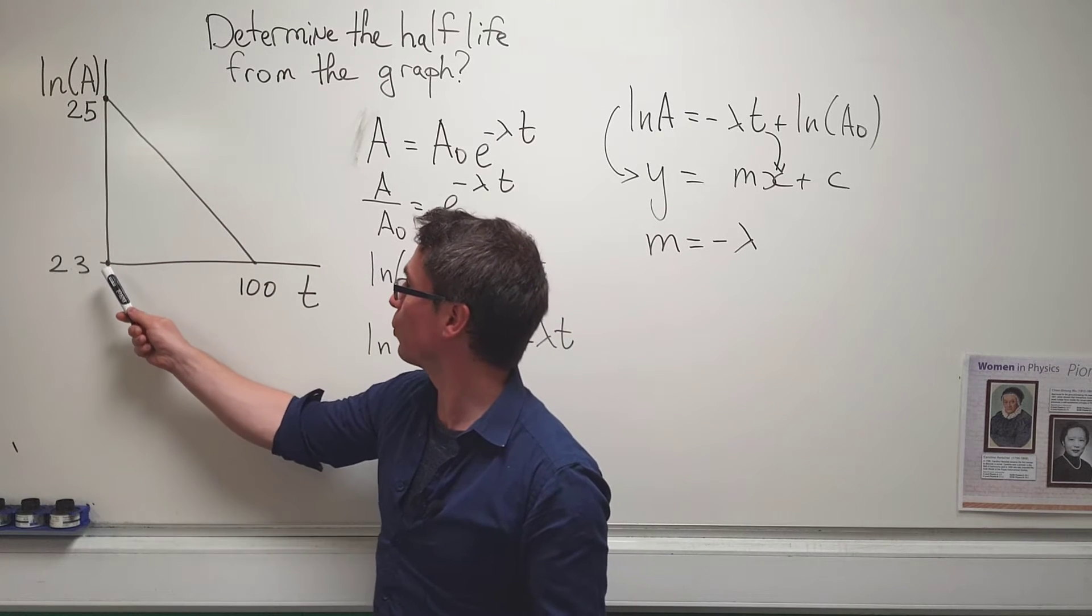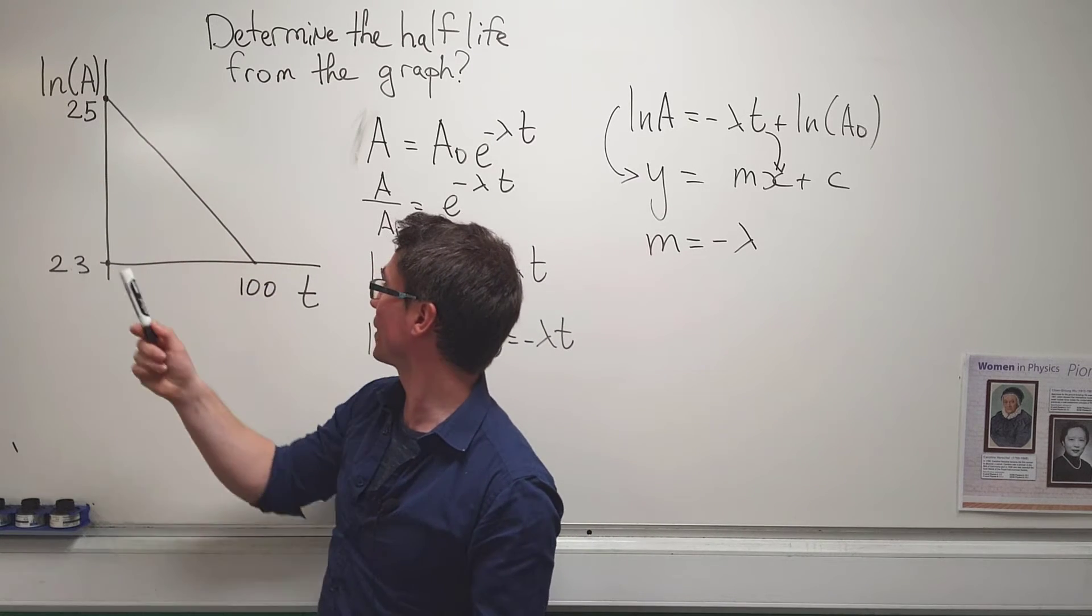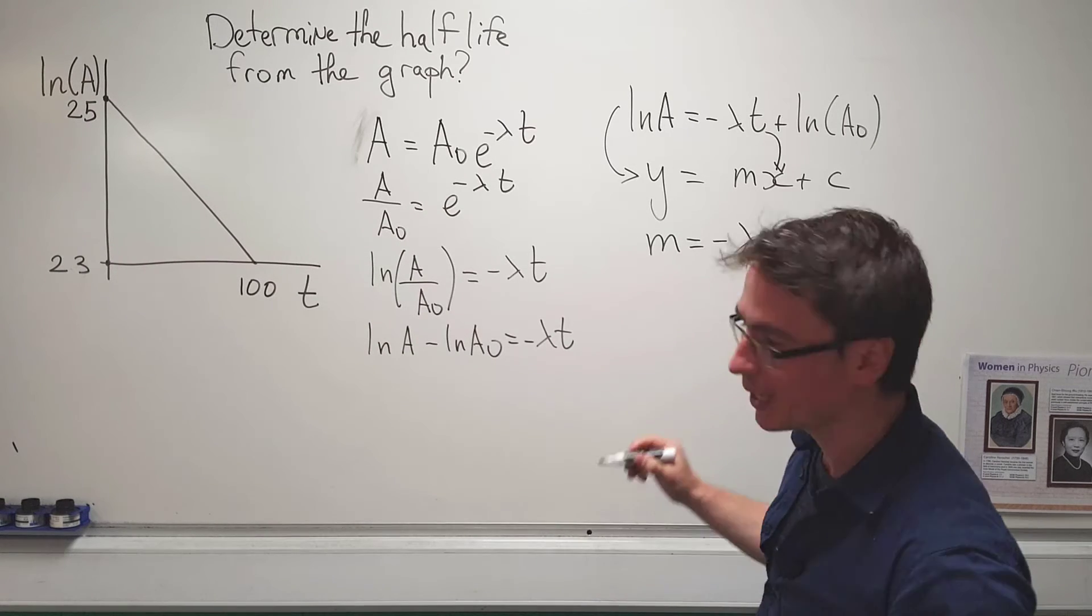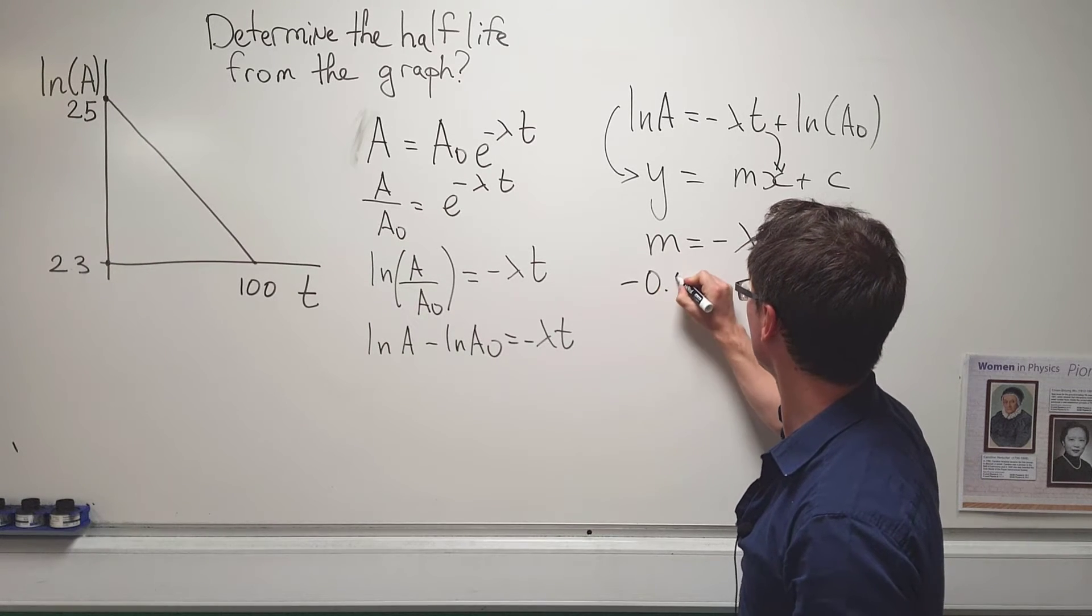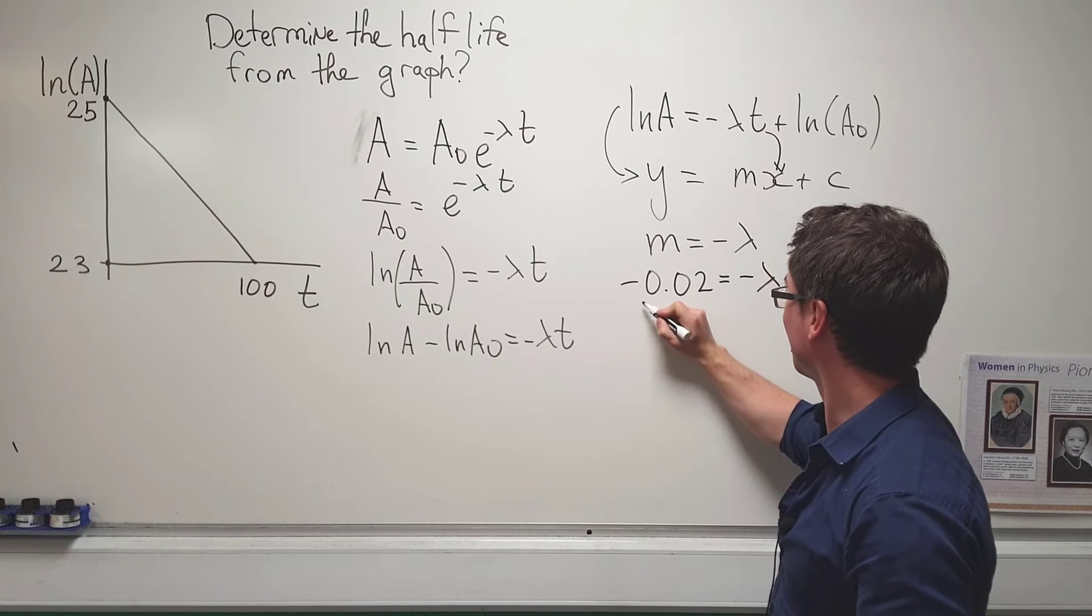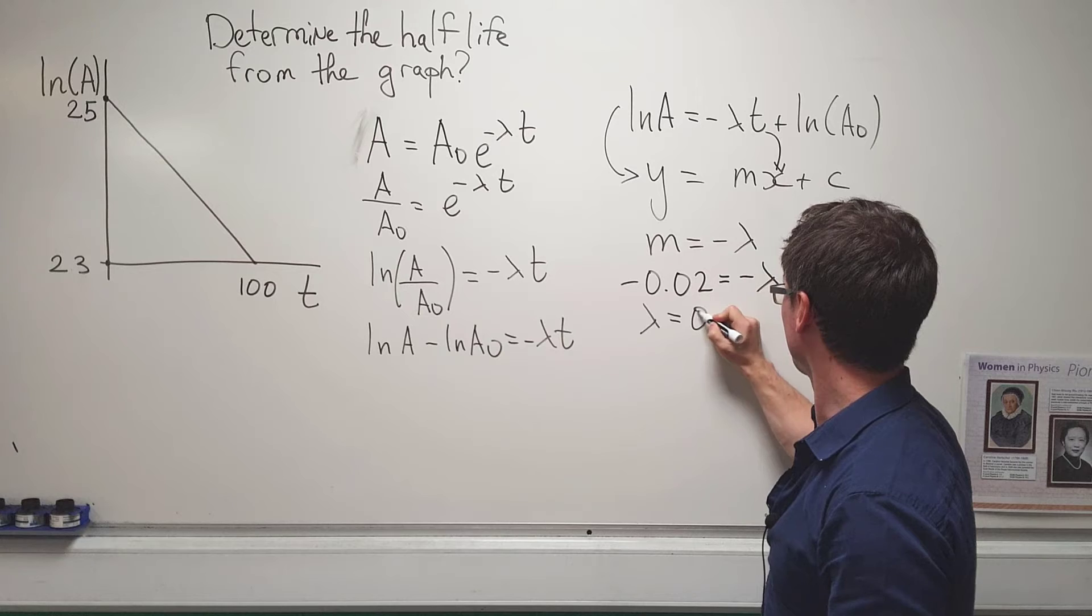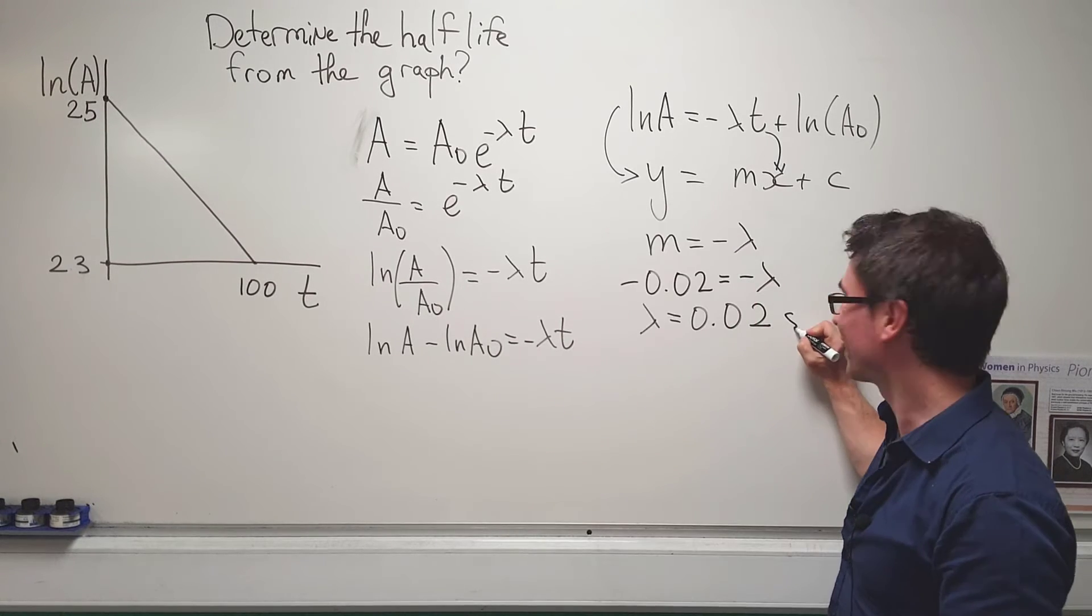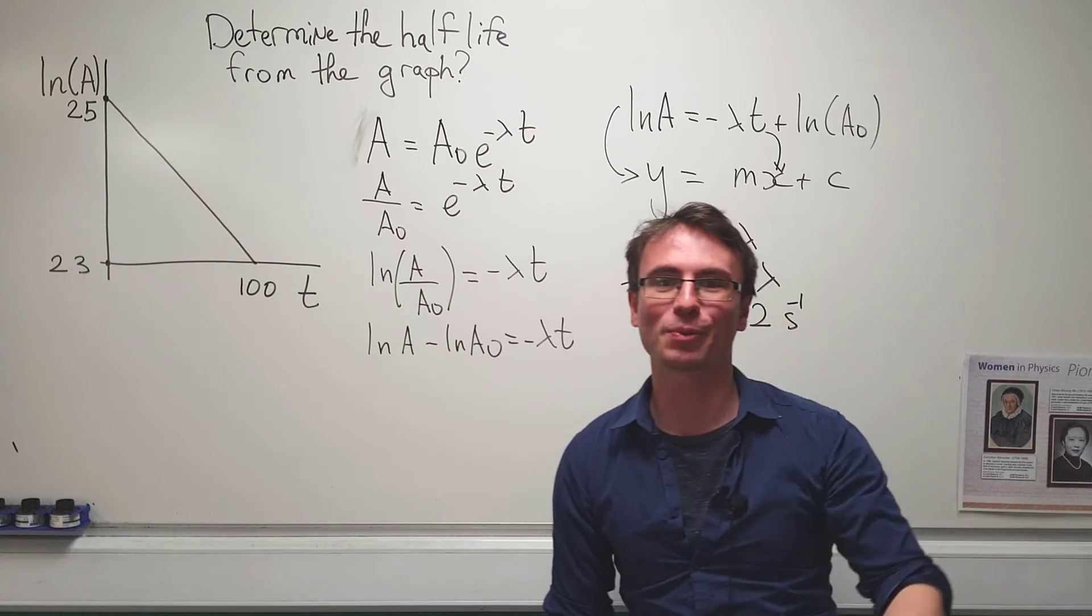So our gradient will just be equal to 23 take away 25 over 100, which will give us just minus 0.02, meaning that the decay constant lambda is just equal to 0.02 seconds to the power of minus 1.